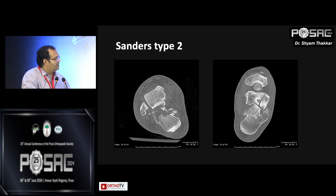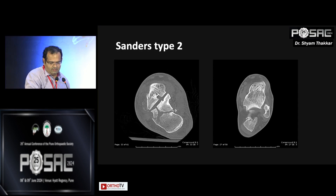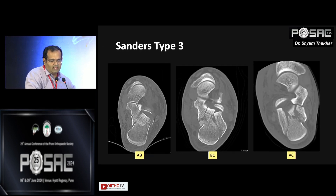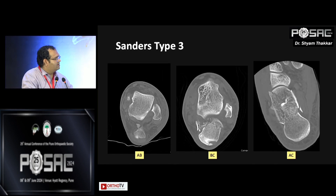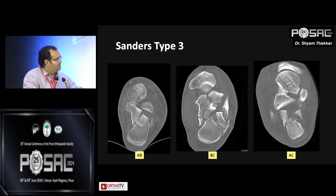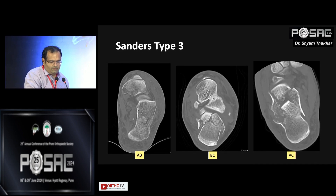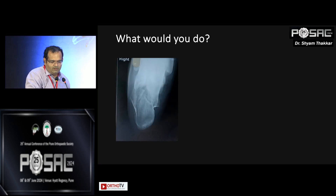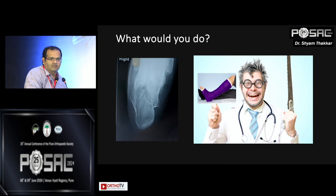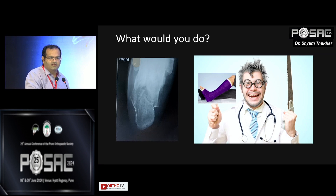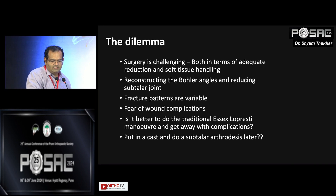Looking at Sanders Type 2, we see fracture lines for 2A, 2B, and 2C, with multiple depressed fragments. For Type 3, there are two fracture lines — AB, BC, and AC subtypes. In such cases, we either operate or conserve. Most of these fractures are conserved, and we have seen many mal-united fractures that are very difficult to treat compared to managing them in the acute scenario.